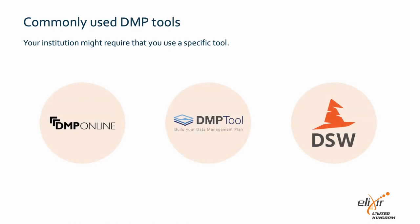Three commonly used tools for writing DMPs are DMP Online, DMP Tool — more commonly used in the US — and Data Stewardship Wizard. Depending on your institution, you might be required to use a specific one of these tools, or you may be able to choose.